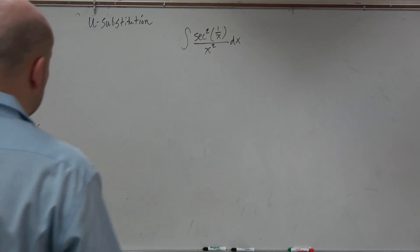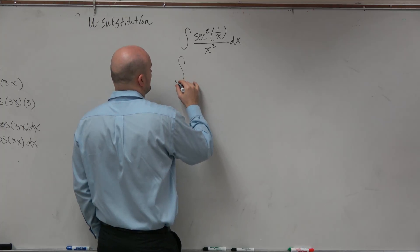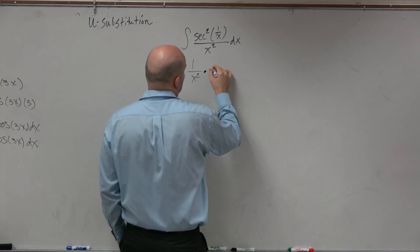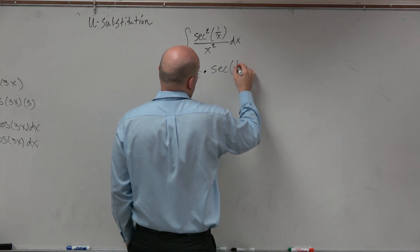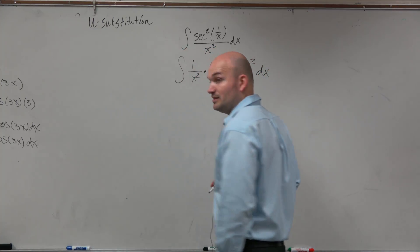Apply that kind of thinking here. Let's rewrite this and say, let's rewrite this as 1 over x squared times secant of 1 over x squared dx. Right? Let's try to do the same thing.